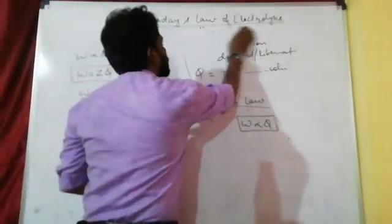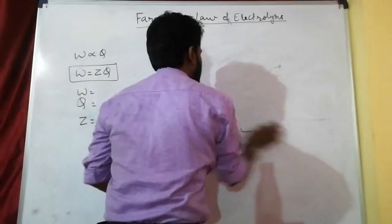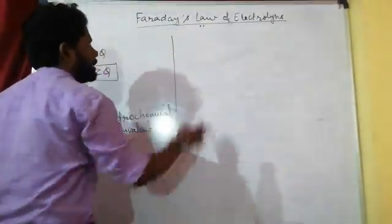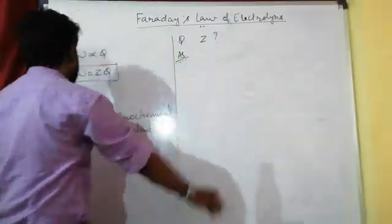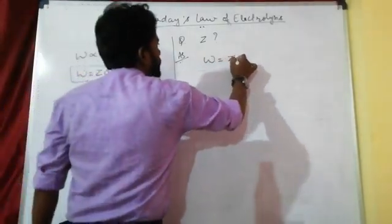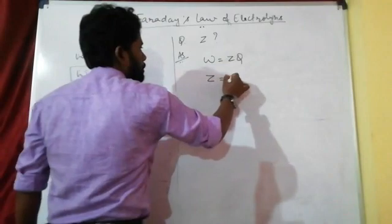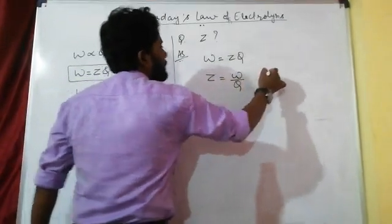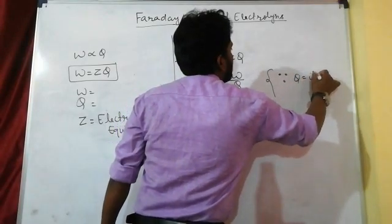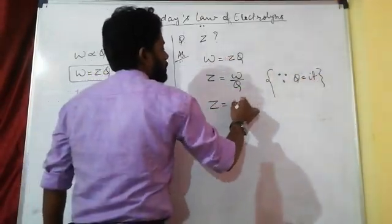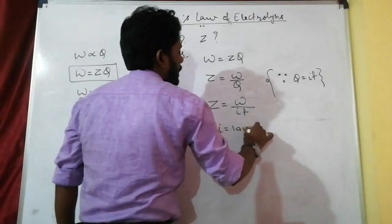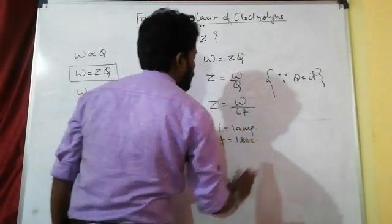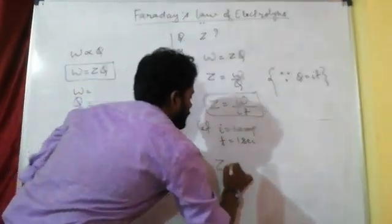To define electrochemical equivalent Z for one mark: from W = ZQ, we get Z = W/Q. Since Q = I×t, this becomes Z = W/(I×t). If we assume I = 1 ampere and t = 1 second, then Z = W/(1×1), so Z equals W.